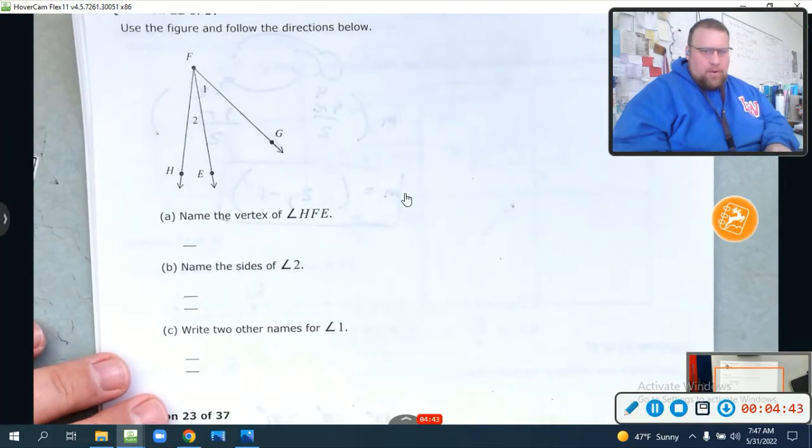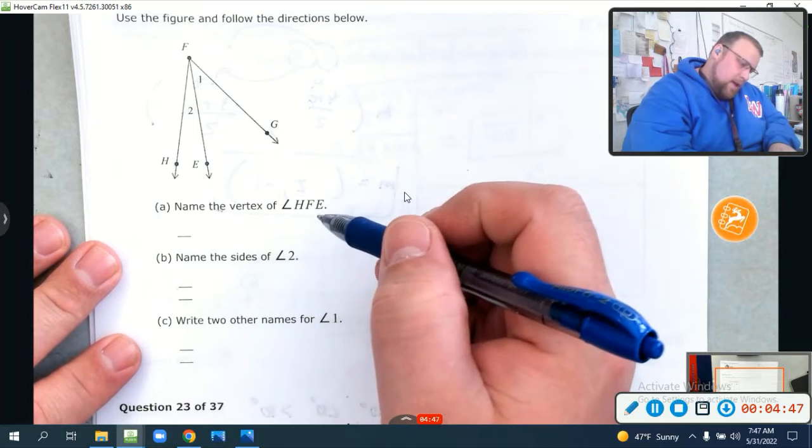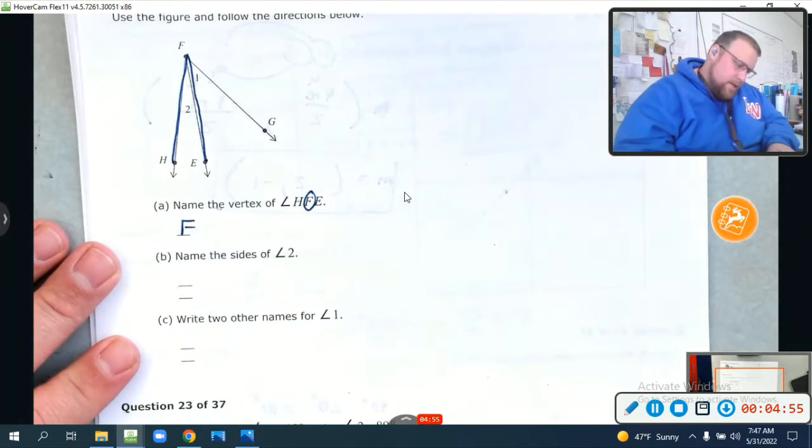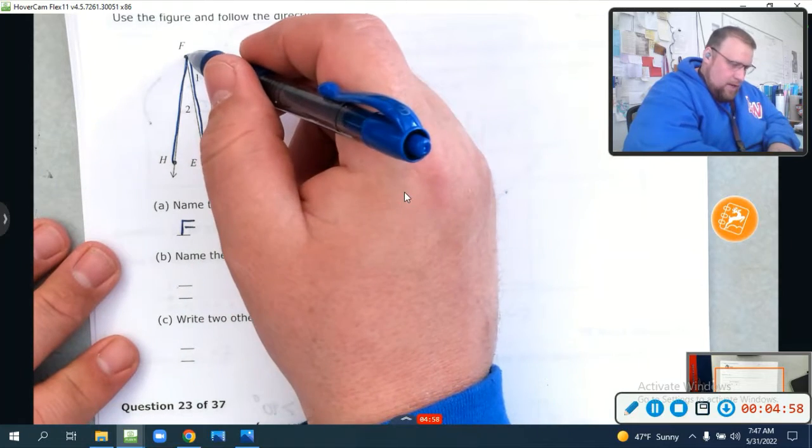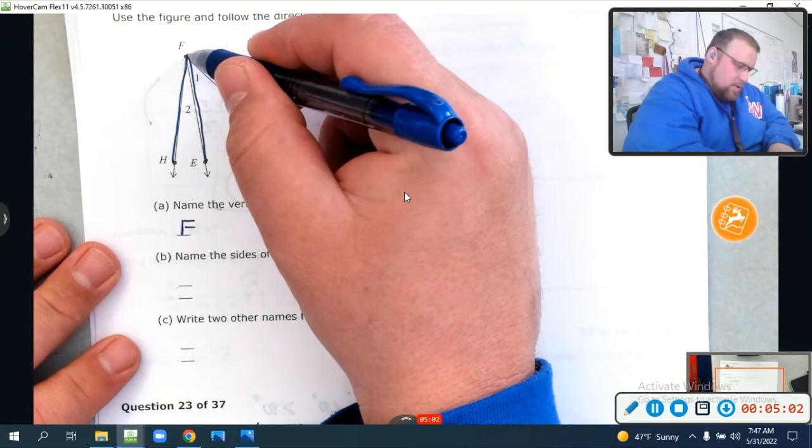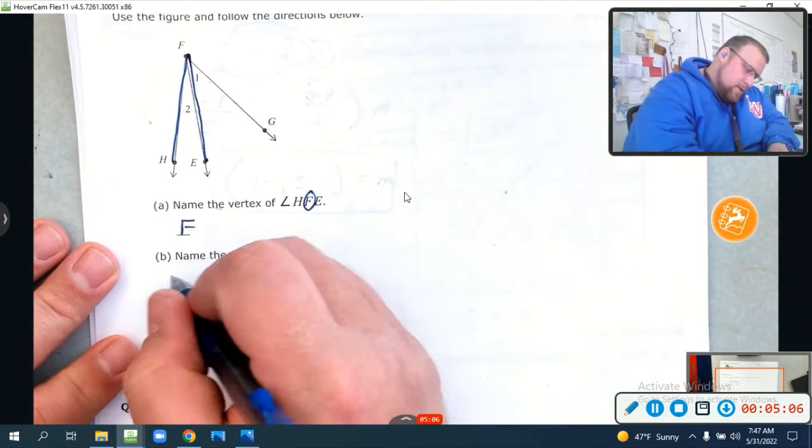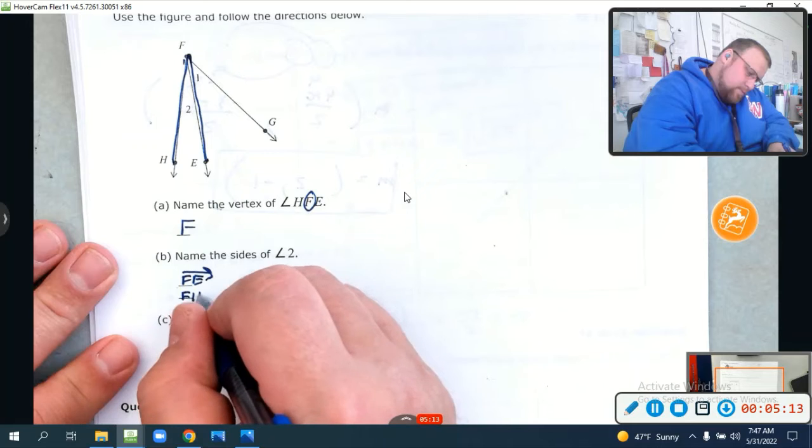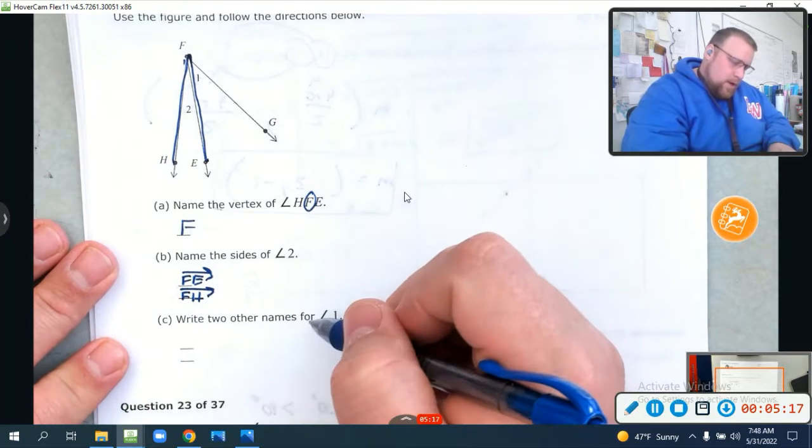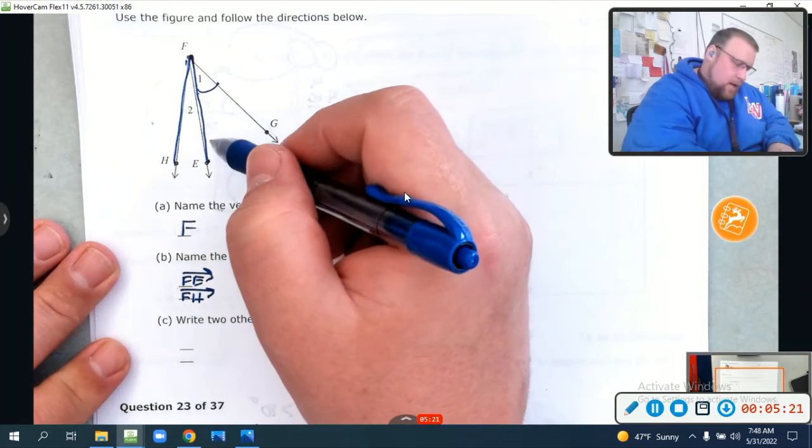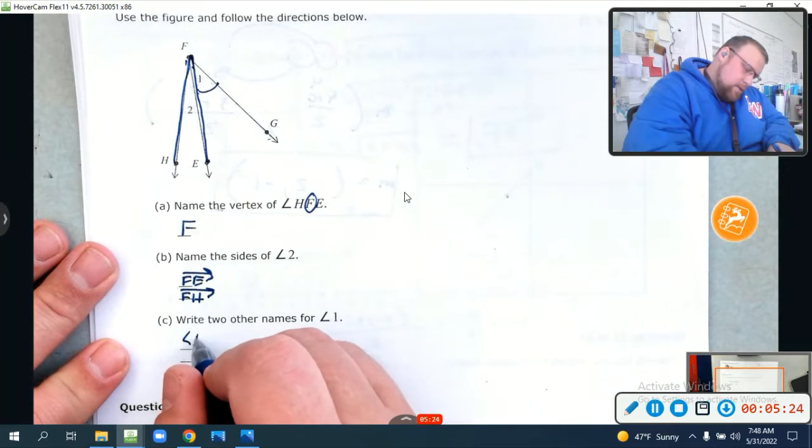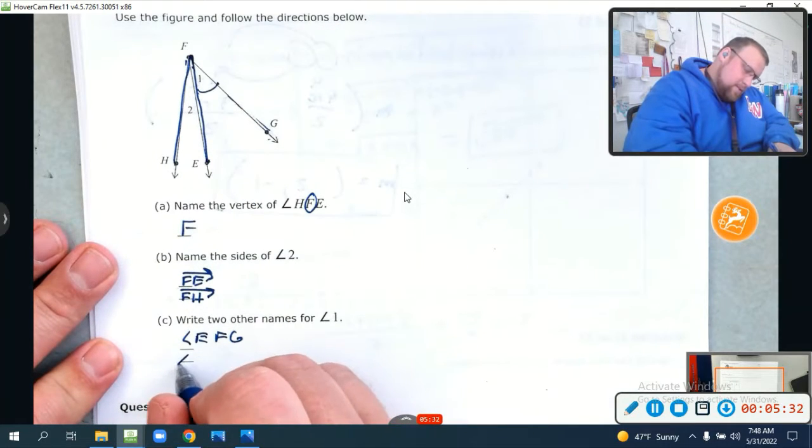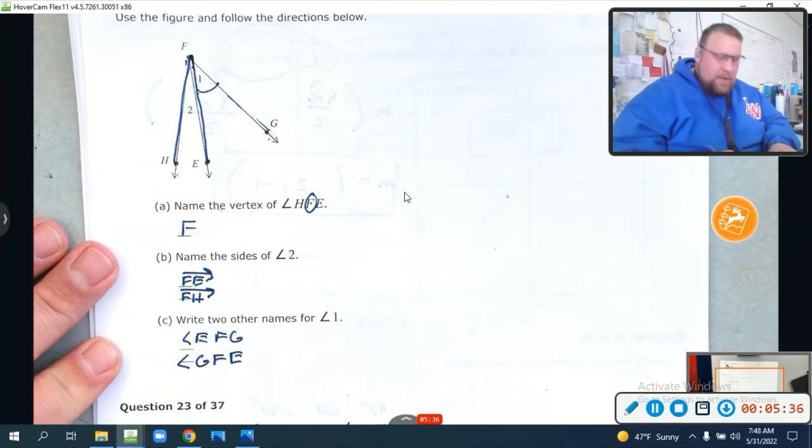Use the figure and follow the directions below. Name the vertex of angle HFE. Let's follow it around. H, F, E. I can already tell you. The vertex is always in the middle, guys. It's F. The sides of angle 2. Angle 2, the sides. Again, that's HFE, right? Same angle. So, the sides would be FE. Always go from the vertex. F, E. So, the sides are Ray FE and Ray FH. Write two other names for angle 1. Well, angle 1 is right here. I can call it angle EFG. I could also call it angle GFE. No matter what, that F has to be in the middle because it's the vertex.